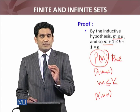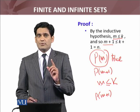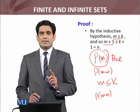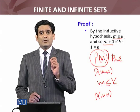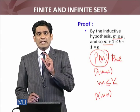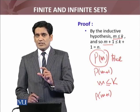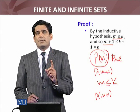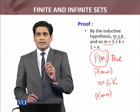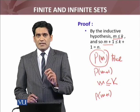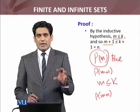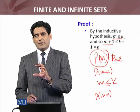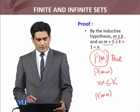What does that proposition say? This proposition says that agar koi initial segment hamare paas hai aur us initial segment se another initial segment pe we have an injective mapping, then the number of elements in the domain will be less than or equal to the number of elements in the co-domain.